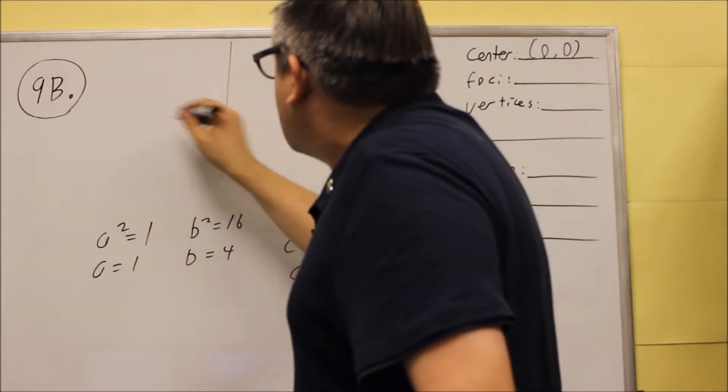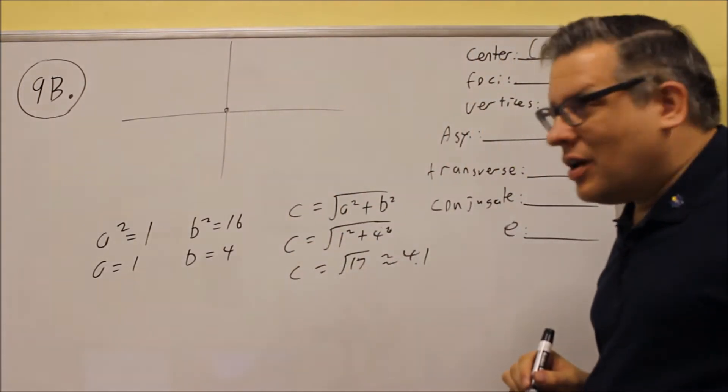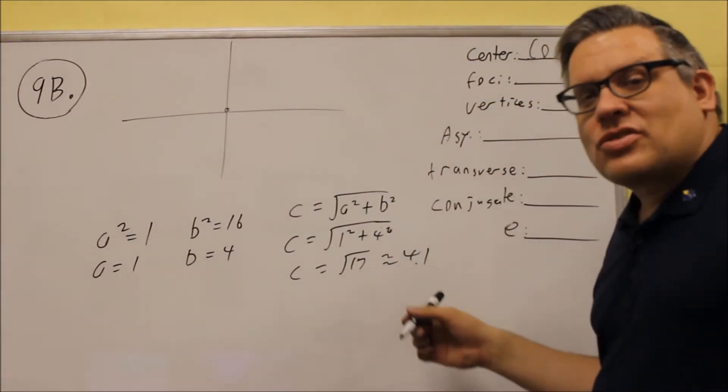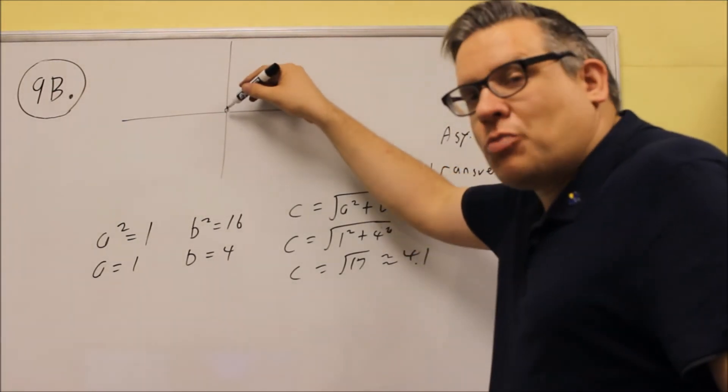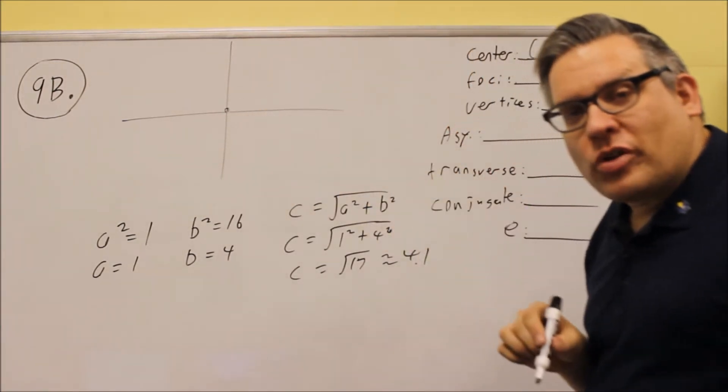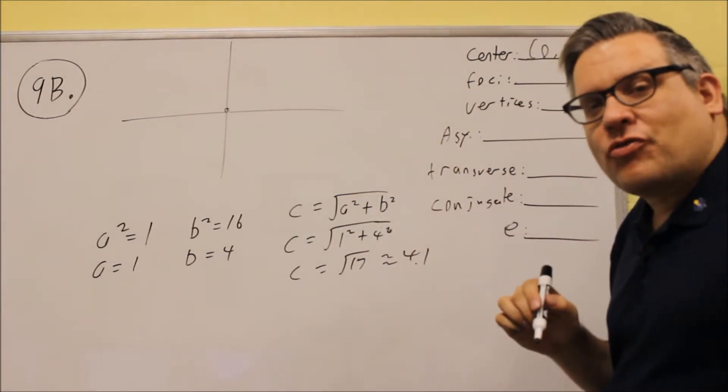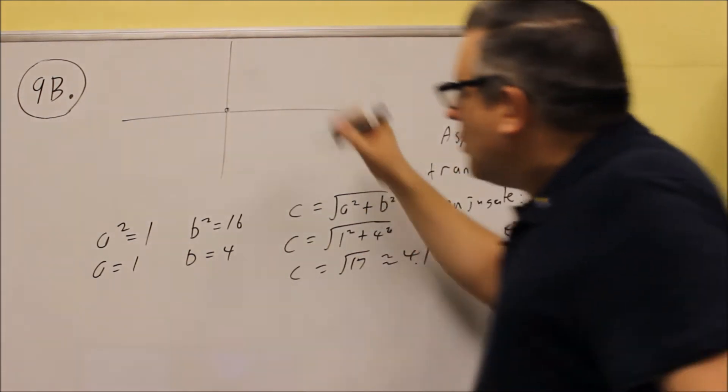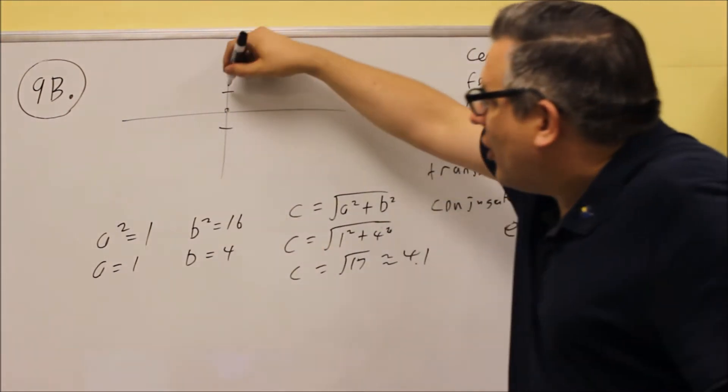First thing I'm going to do is the center. The center this time is 0, 0. The a has to go in the direction that it opens up. So, even though a is smaller, we've got to go up and down with a because since y squared came first in the formula, we know it opens up and down. So, we're going to go up 1, and then we're going to go down 1. That's the a value.